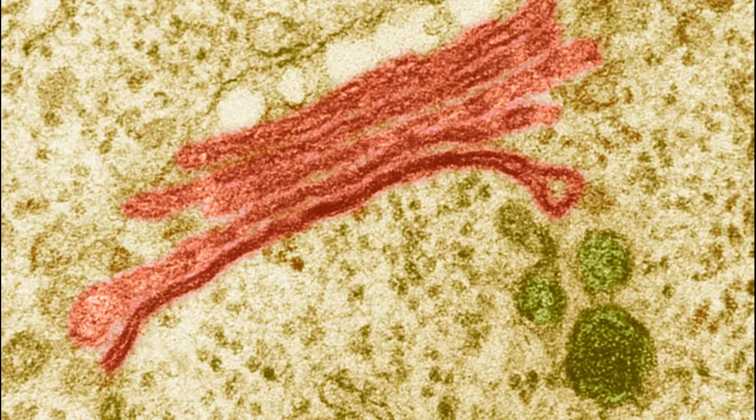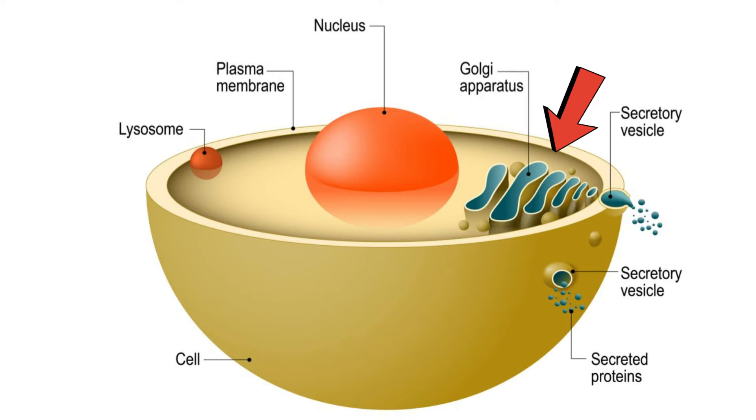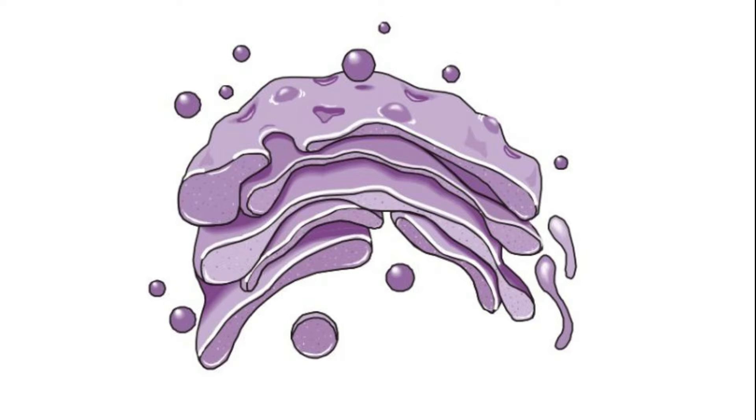The Golgi apparatus, named after its discoverer Camillo Golgi, is a vital cellular structure found in eukaryotic cells. Nestled within the cytoplasm, this organelle takes center stage in the complex journey of biomolecules within the cell.